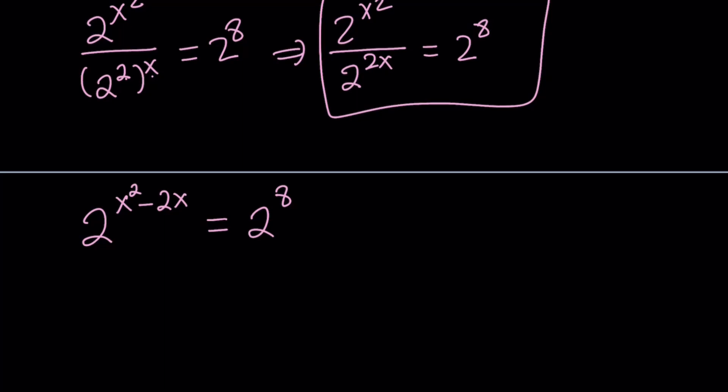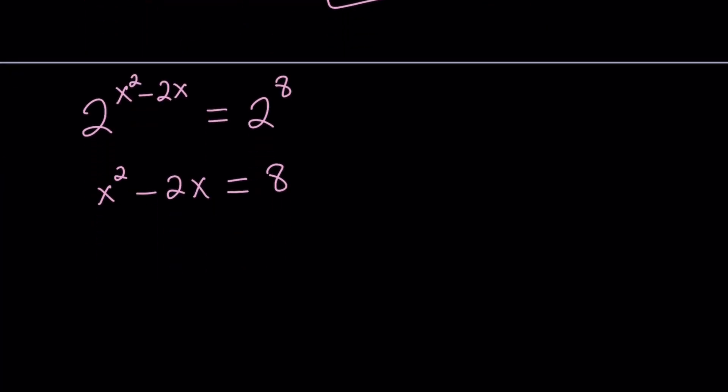Since we have the same base, and the base is different from 1 or negative 1, we can safely say that the exponents are equal. This implies x squared minus 2x equals 8. And that implies a quadratic equation, x squared minus 2x minus 8 equals 0.